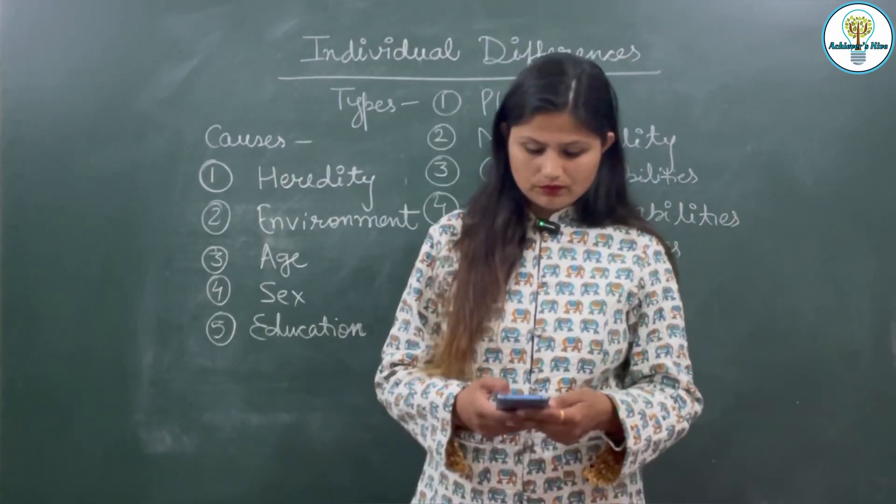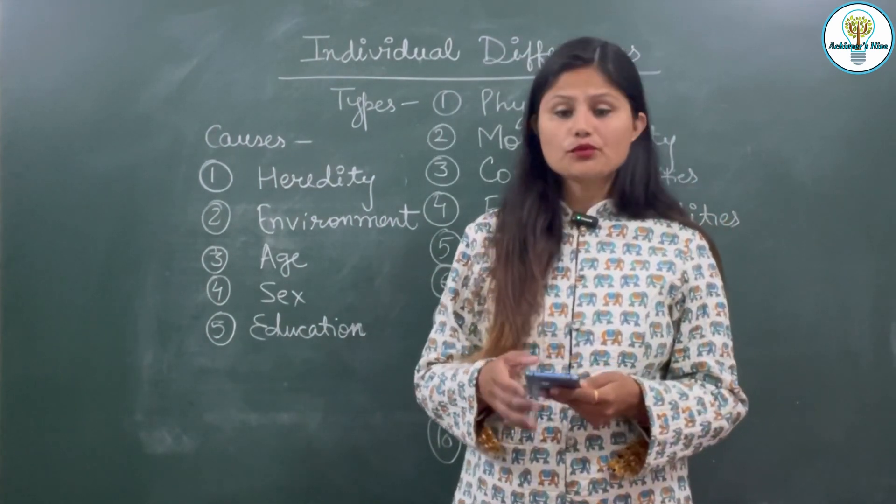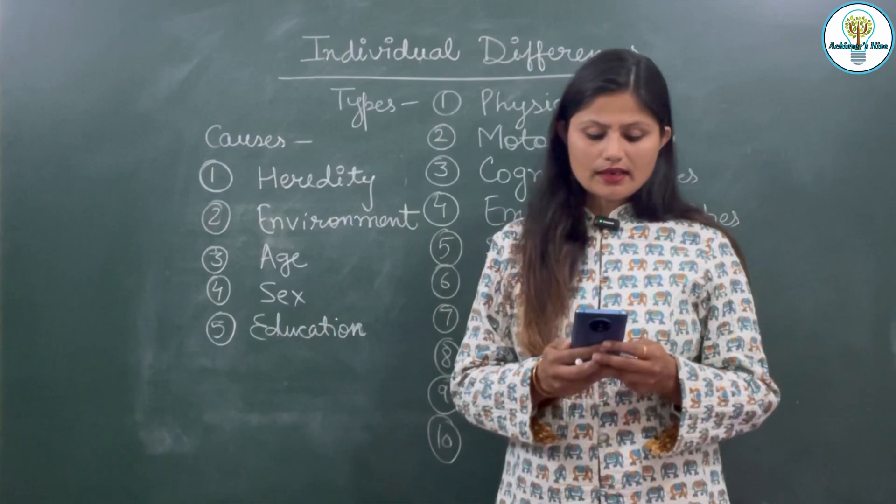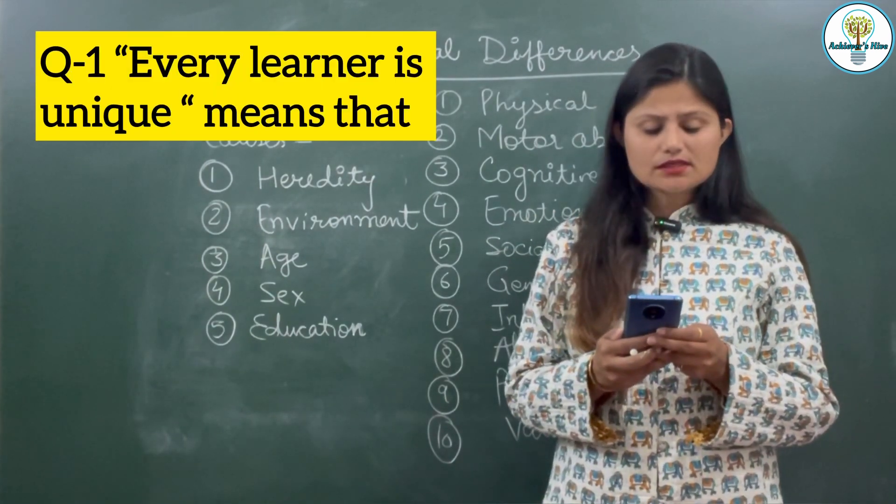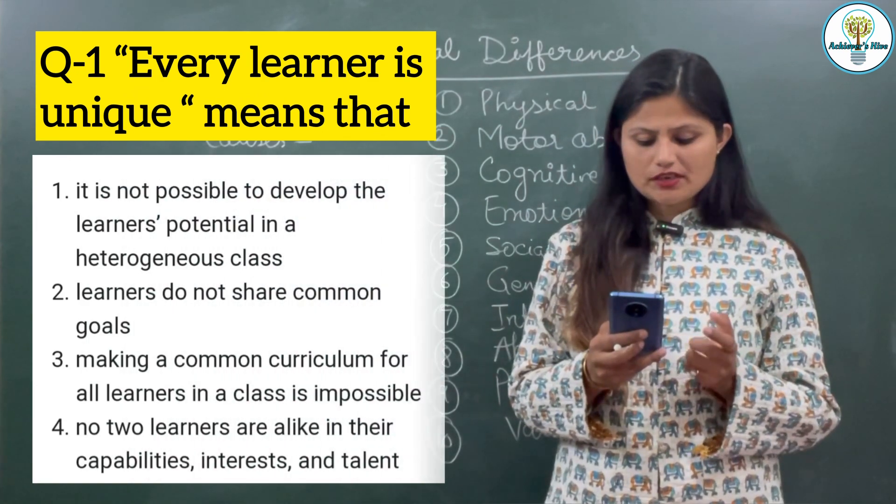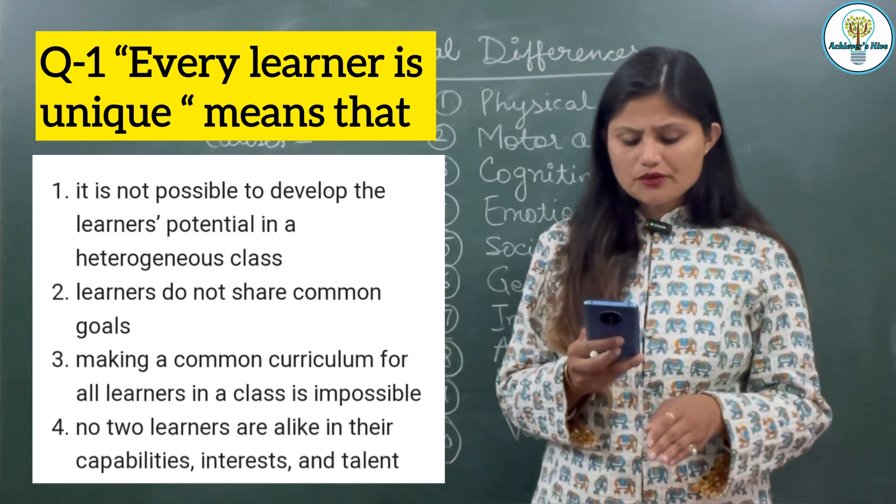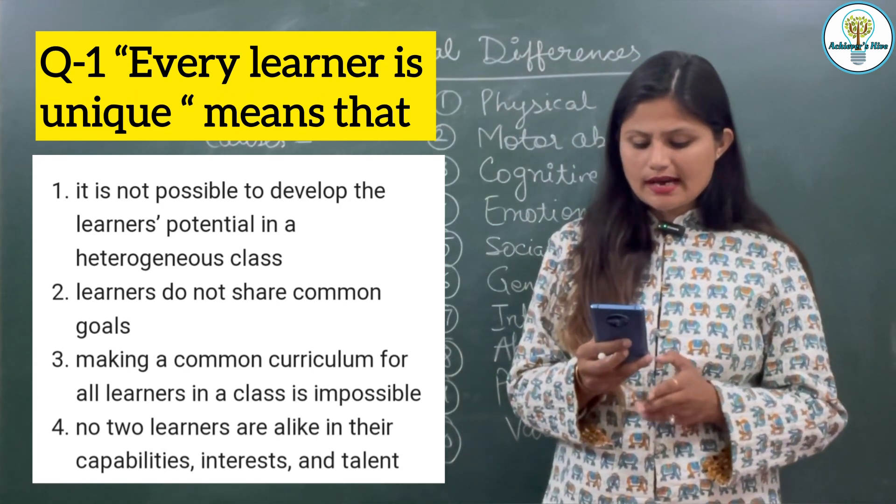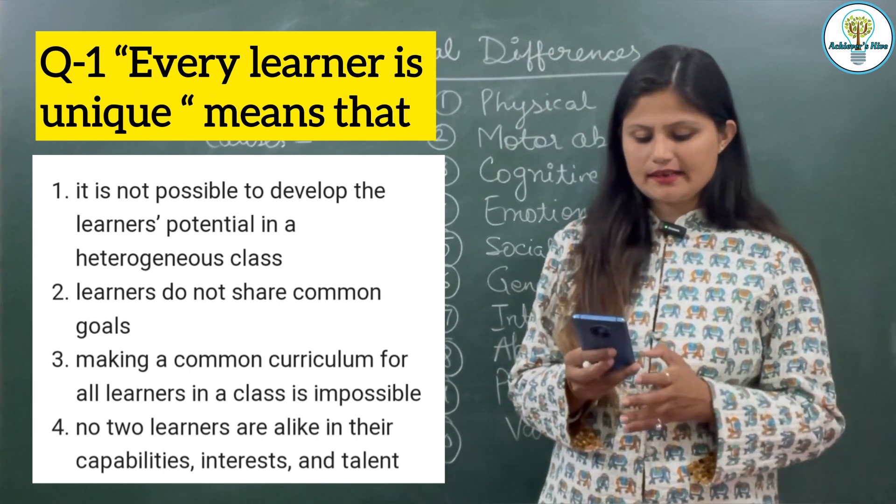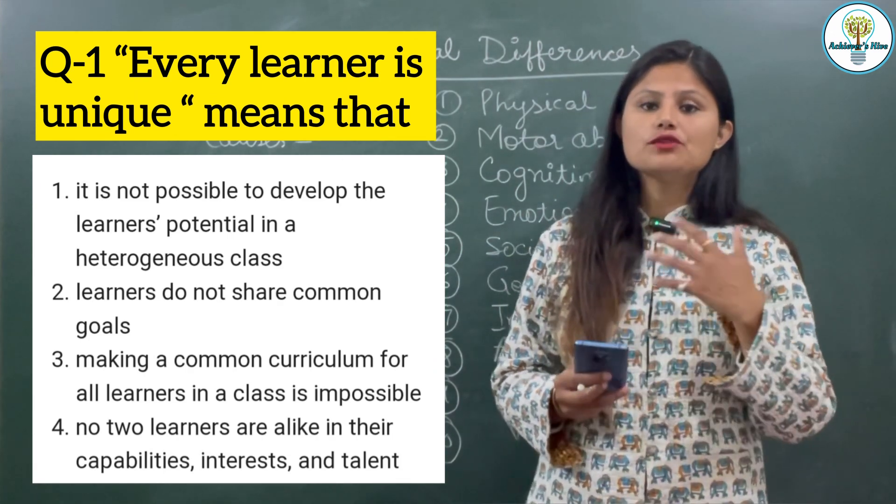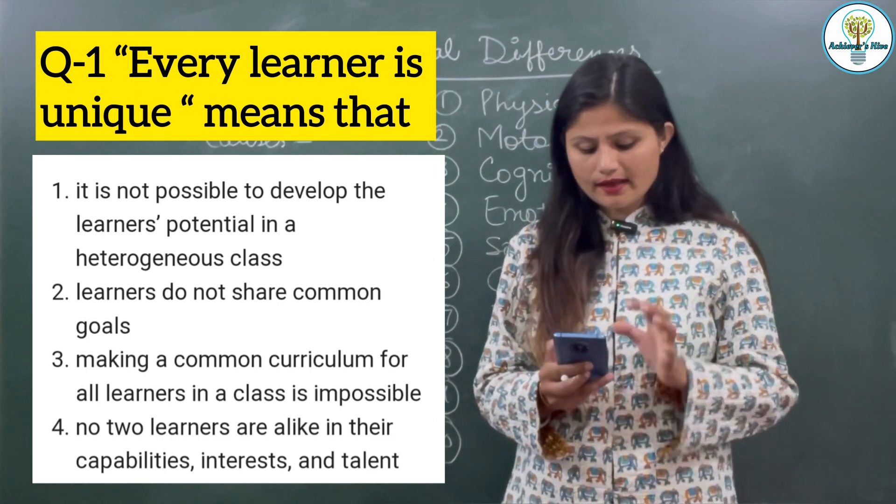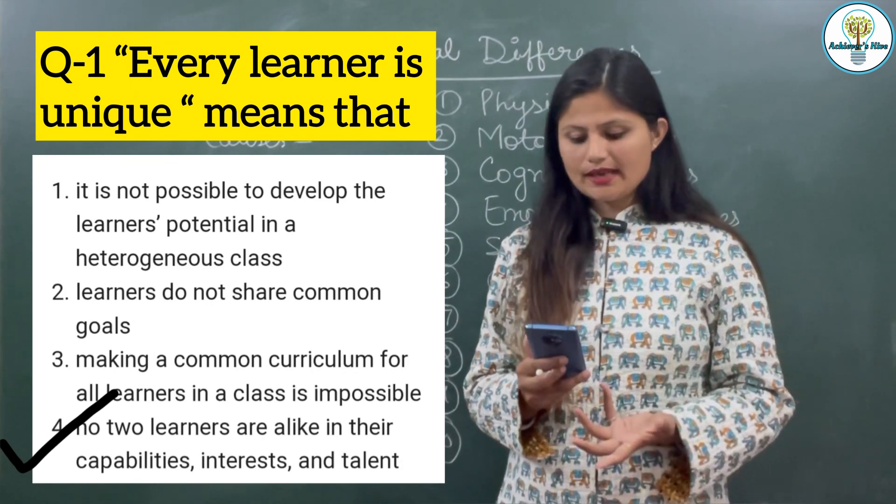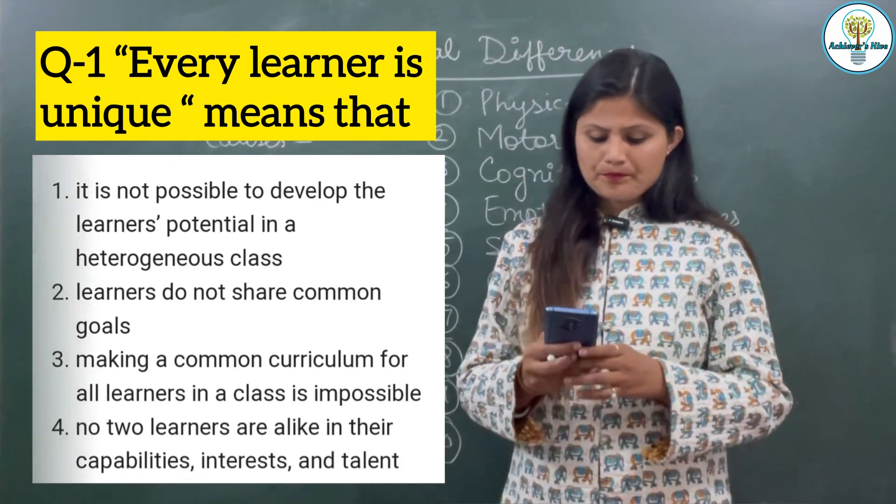Now I will explain questions which I will show on your screen. The statement is: every learner is unique means - option one, it is not possible to develop the learner's potential in a heterogeneous class. Option two, learners do not share common goals making a common curriculum impossible. Option three, making a common curriculum for all learners is impossible. Option four, no two learners are alike in their capabilities, interest and talent. Which option is most appropriate? The last option - no two learners are alike in their capabilities, interest and talent - this is the meaning of individual differences.